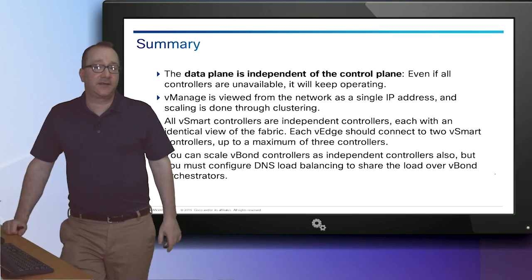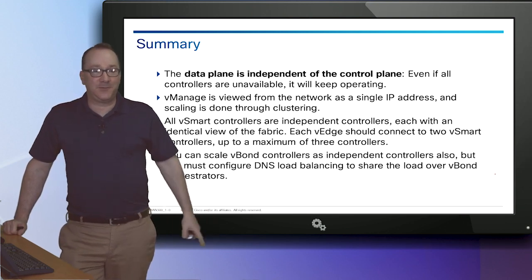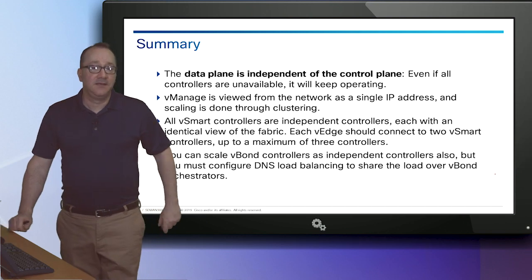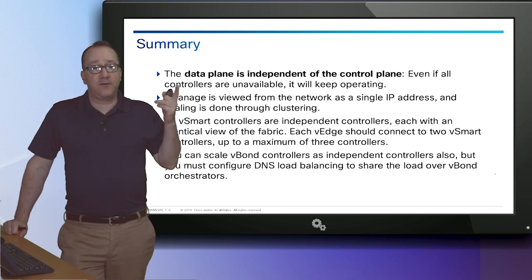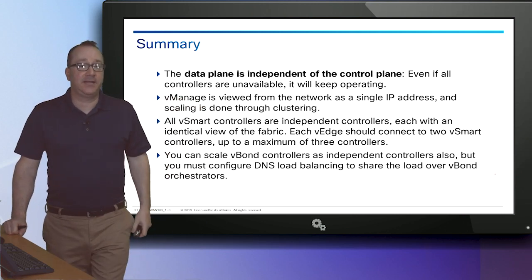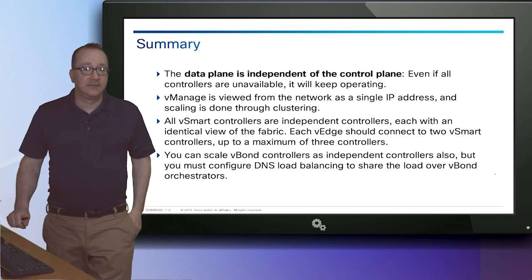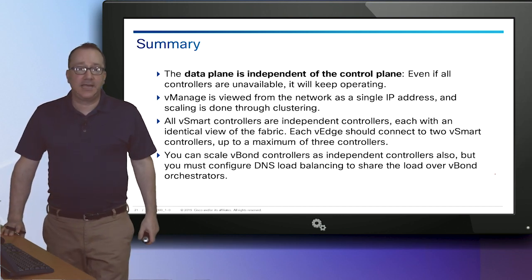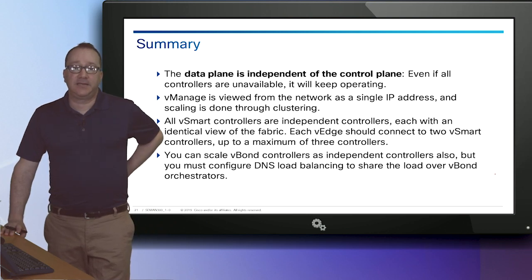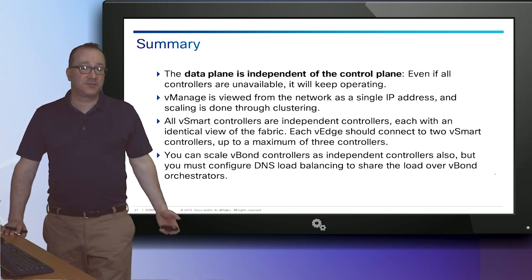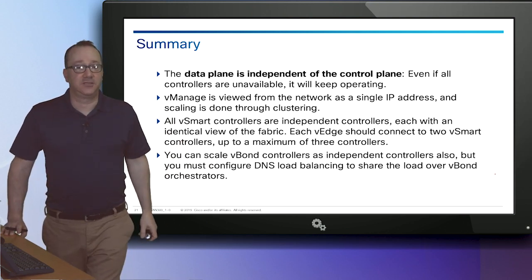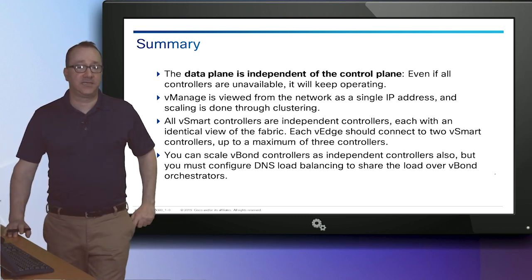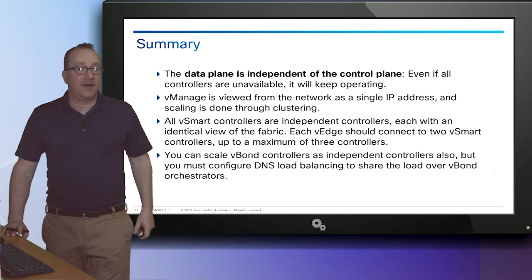The data plane is completely independent of the control plane — even if all controllers are unavailable, it will keep operating. vManage is viewed from the network as a single IP address and scaling is done through clustering, so you have one virtual IP address and it takes you to the active vManage. All vSmart controllers are independent, each with an identical view of the fabric. Each vEdge should connect to at least two controllers. You can also scale vBond controllers as independent controllers, but you'll need to configure load balancing across vBond orchestrators.